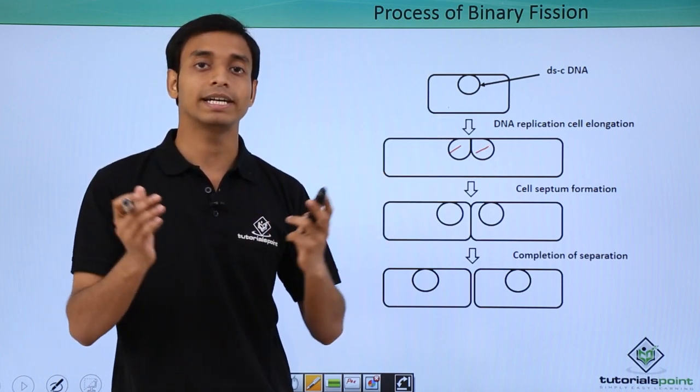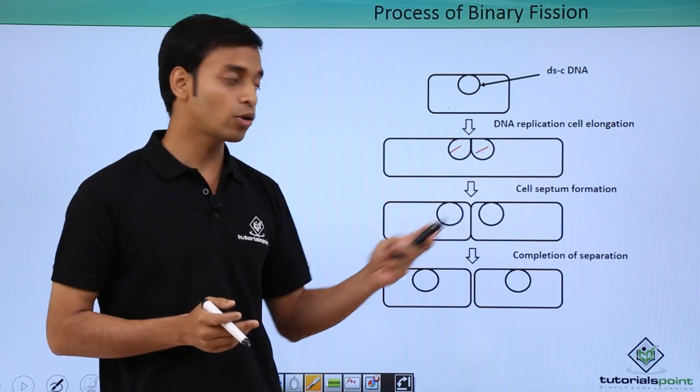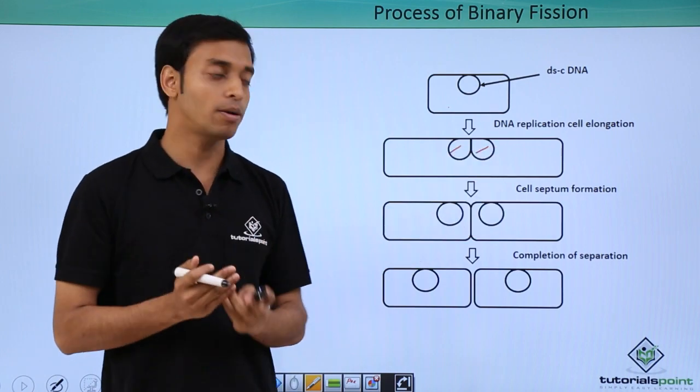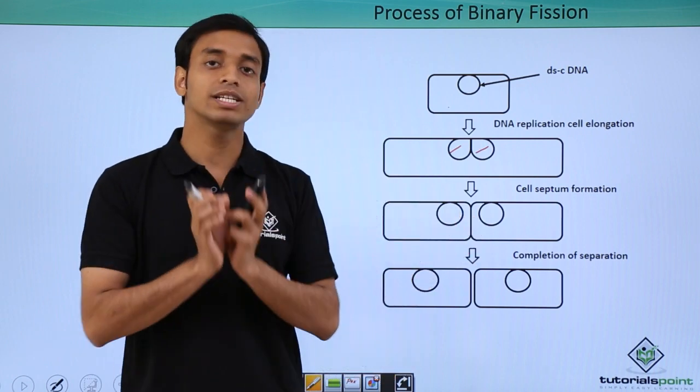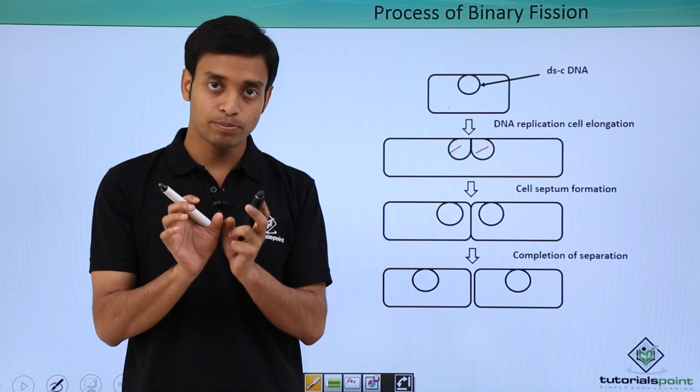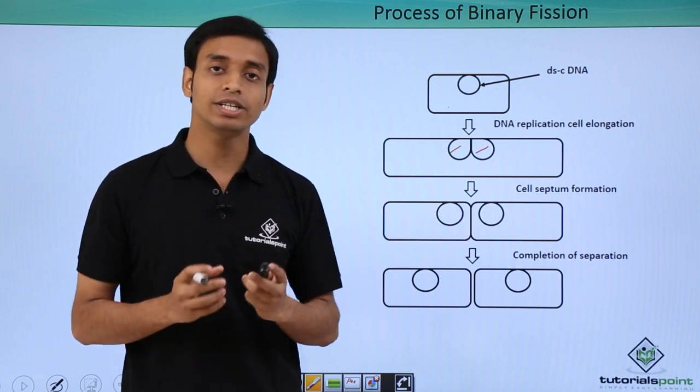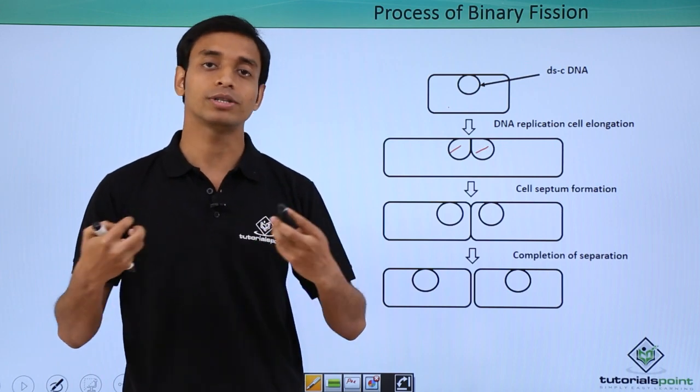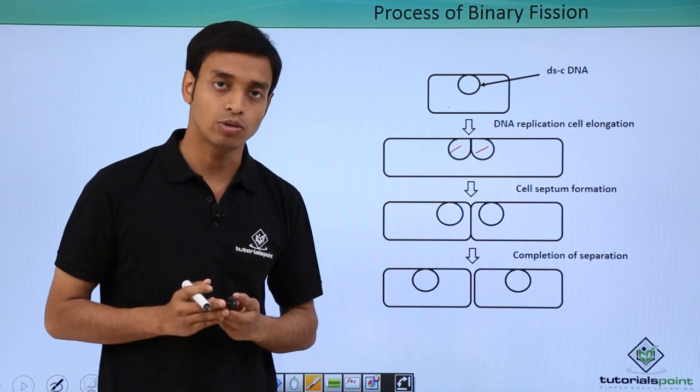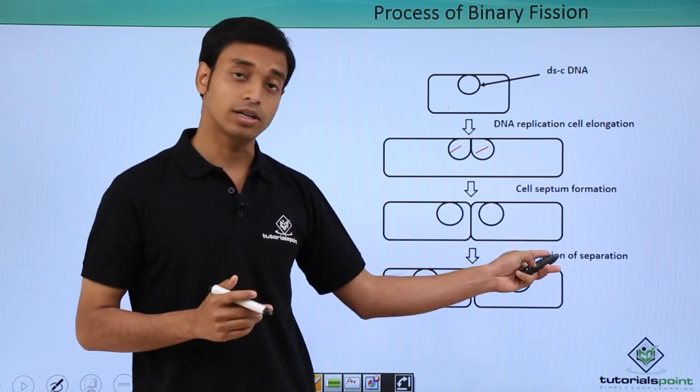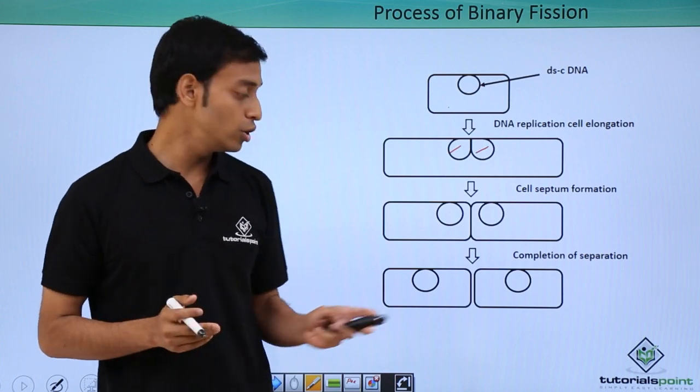After this, it is followed by septum formation. That is, a membrane forms in between these two. Because of this membrane formation, it pulls apart these two and separates. These two replicated DNAs try to move towards opposite directions. This is followed by double-layer cell wall formation. After this, complete separation happens and it results in the formation of two daughter cells.